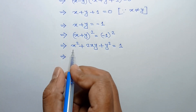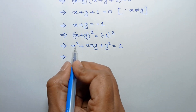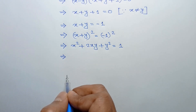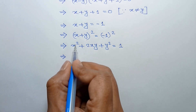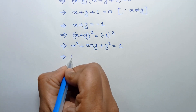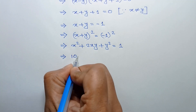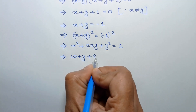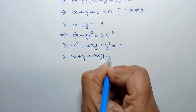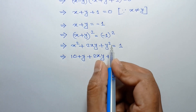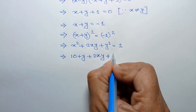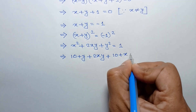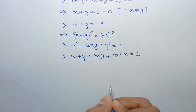From equation 1, the value of x squared is equal to 10 plus y. Substituting, we write 10 plus y plus 2xy, and from equation 2, y squared is equal to 10 plus x. So the expression becomes 10 plus y plus 2xy plus 10 plus x is equal to 1.